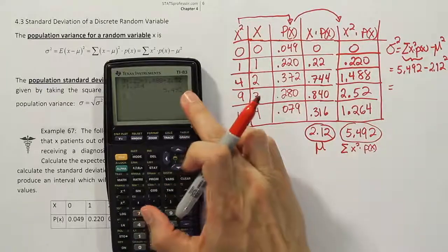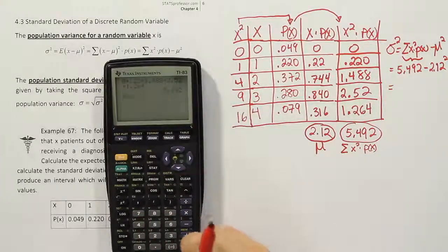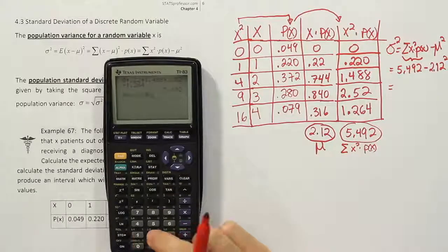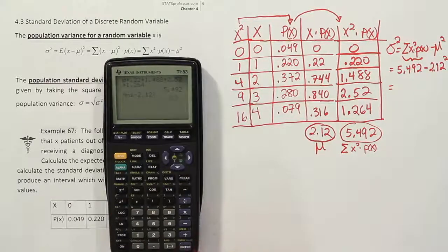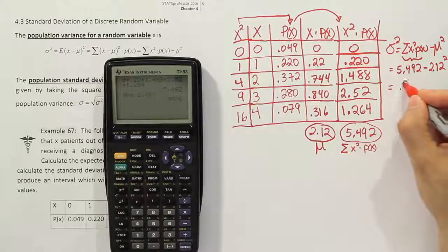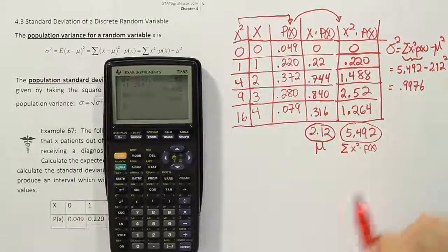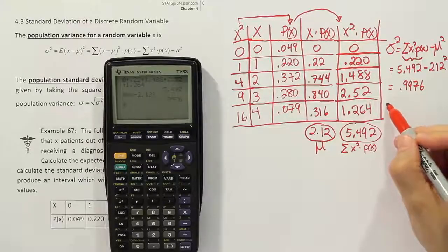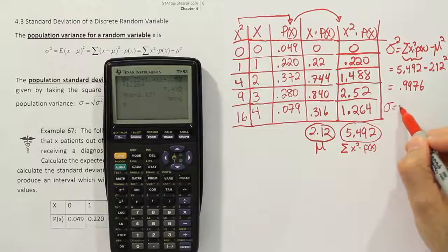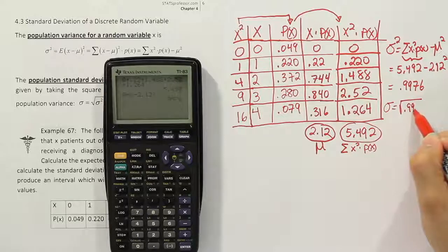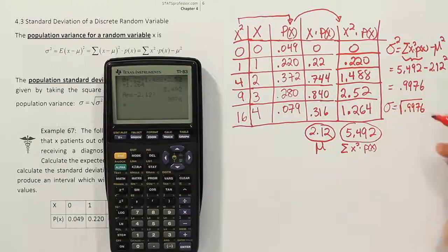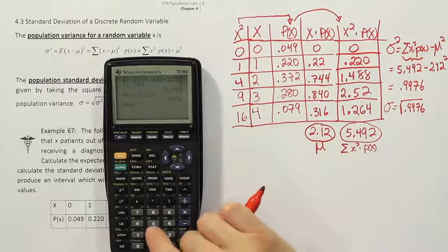Alright, and let's see what that gives us. So the variance will be equal to. We have the 5.492 in my calculator. I'm just going to subtract off the 2.12 squared. And when I'm done, I get the answer 0.9976. So that's my variance.